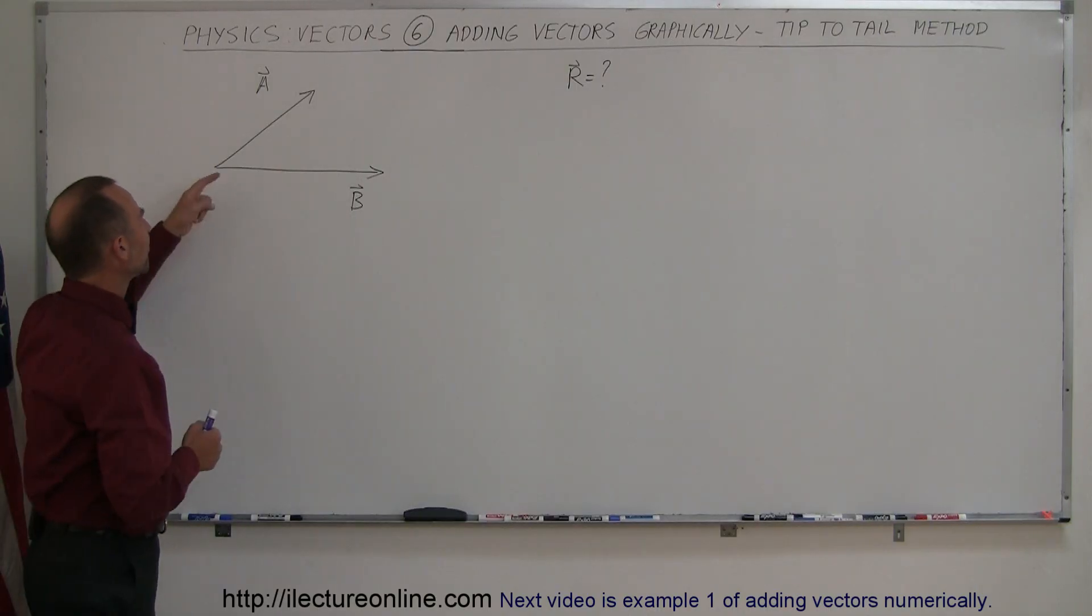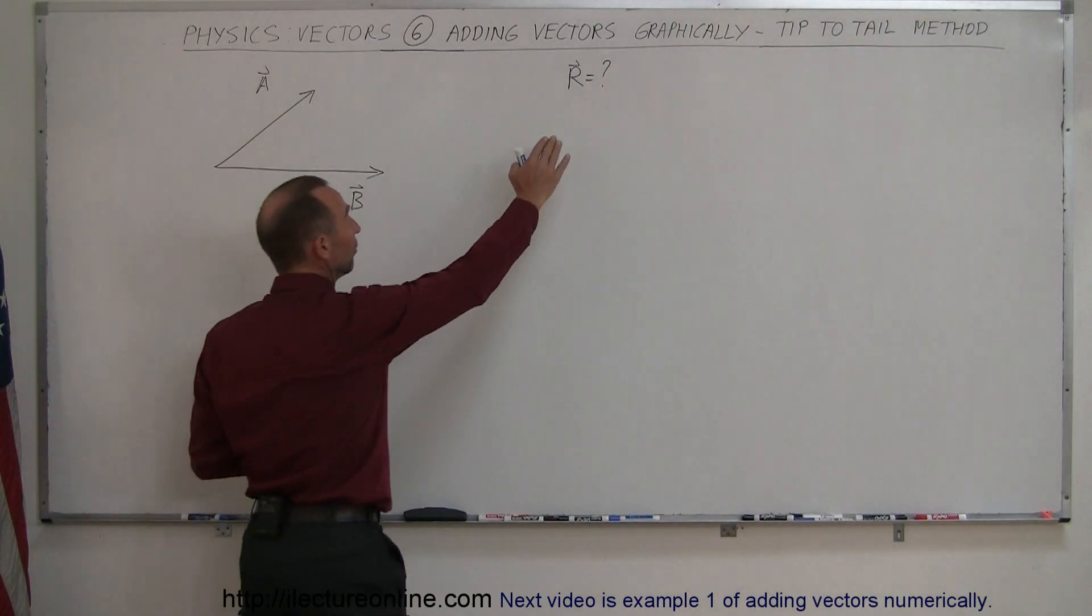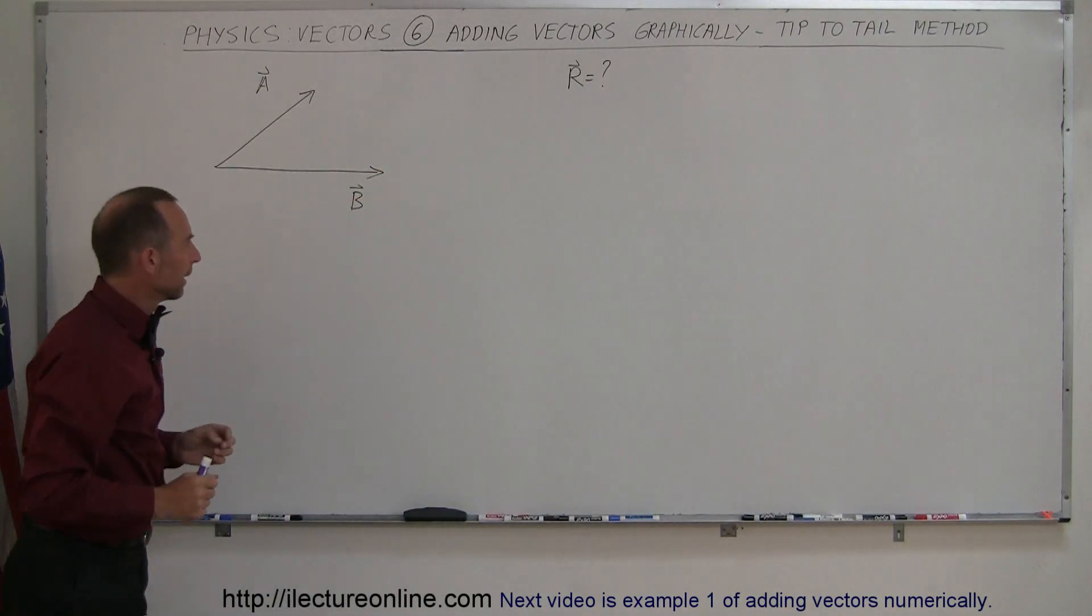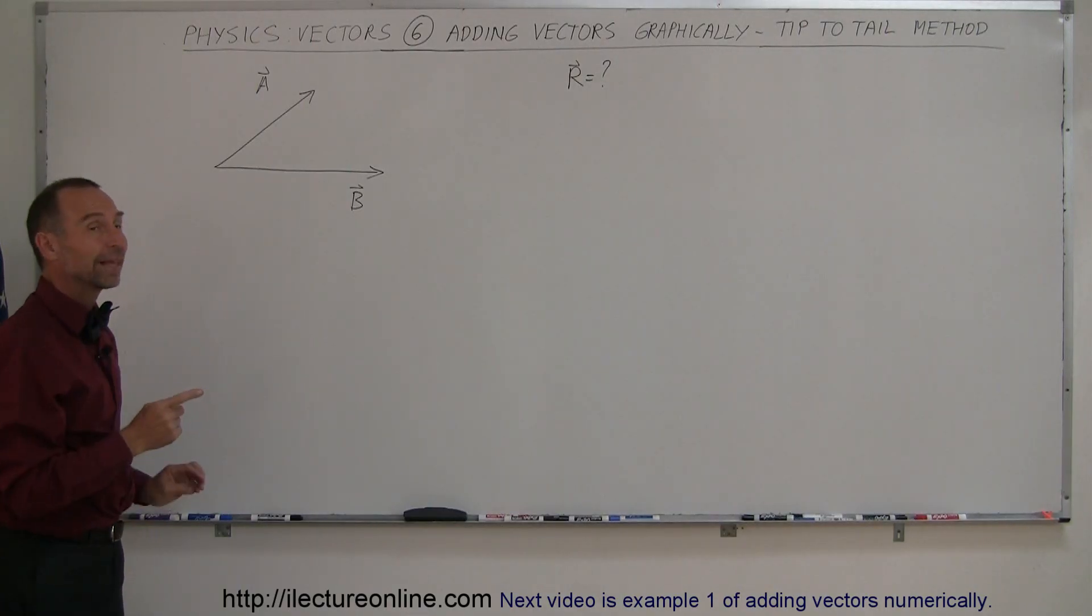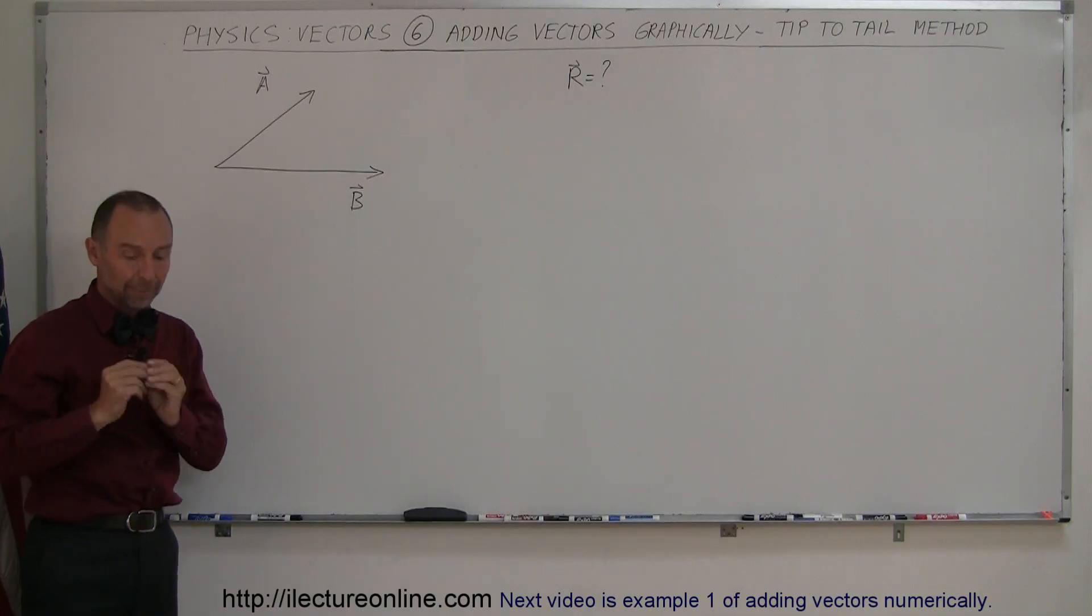So here you notice that we have vector A and vector B. We're supposed to add them together and get the resultant vector R. But they both have their tails together. So what you're going to do is you're going to take one of your two vectors and move it so that the tail of the one vector is at the tip of the other vector.